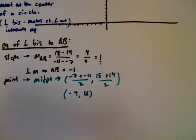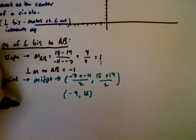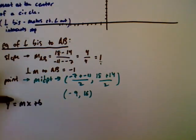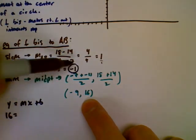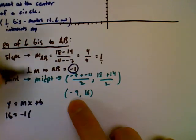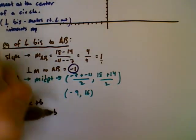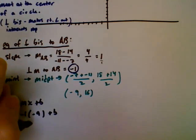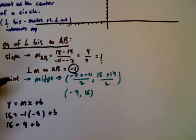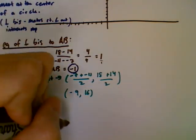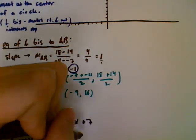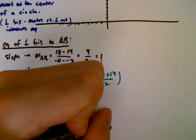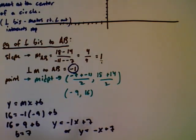Now I take these two things and put them into the equation of a line: y equals mx plus b. I have y equals 16, slope m equals negative 1, and x equals negative 9. Substituting: 16 equals negative 1 times negative 9 plus b, so 16 equals 9 plus b, giving b equals 7. The equation of this perpendicular bisector is y equals negative x plus 7.